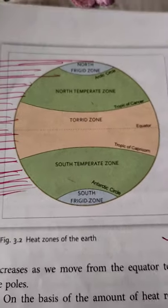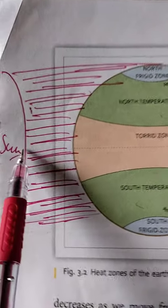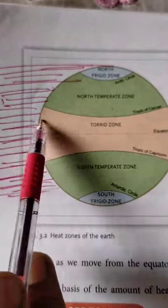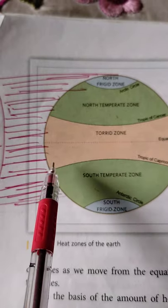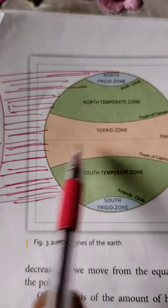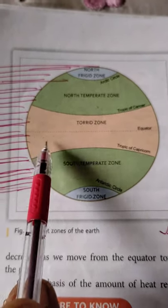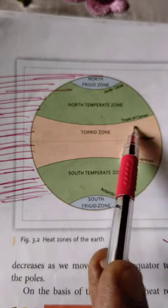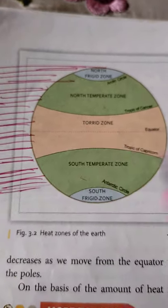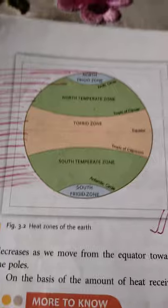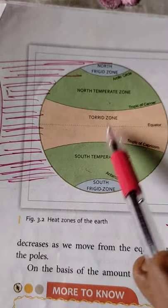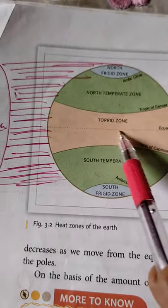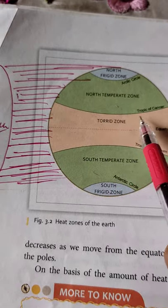In the torrid zone, the Sun rays are coming directly to this region, so this portion receives more heat, and that is why it is called the torrid zone. The countries which lie on the equator are relatively quite heated compared to the temperate zones. The Thar Desert and the Sahara Desert are all situated along this line.